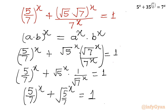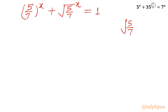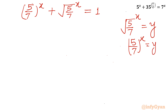Now it is substitution time. I will substitute (√5/7)^x = y. So (5/7)^x = ((√5/7)^x)^2 = y². Note: 5/7 = (√5/7)^2, so (5/7)^x = y². Now I can write y² + y = 1.